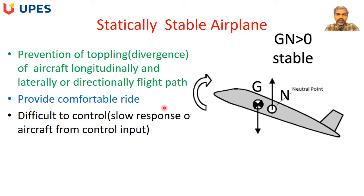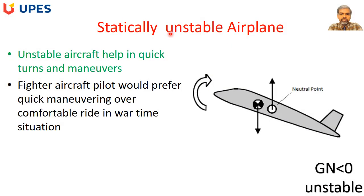There is a difficulty in controlling stable airplanes because of their slow response to control inputs. In the case of unstable airplanes, they enable quick turns and maneuvers. Fighter aircraft pilots prefer quick maneuvering over a comfortable ride in wartime situations, which is why fighter aircraft are statically unstable.